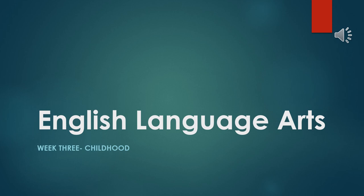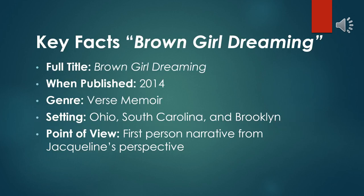Whenever we talk about Brown Girl Dreaming, we talk about certain key facts. First of all, it was published in 2014. The setting combines several places: Ohio, South Carolina, and Brooklyn. The point of view is a first-person narrative from Jacqueline's own point of view and perspective.